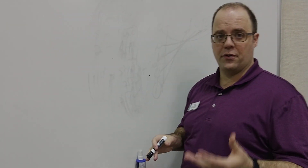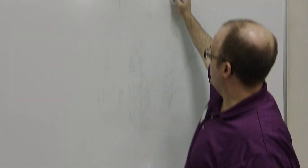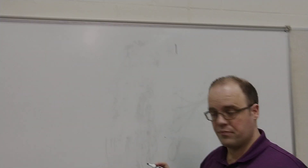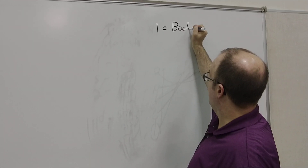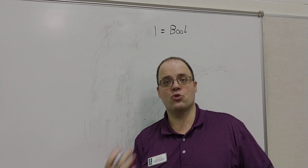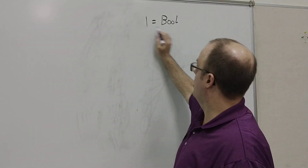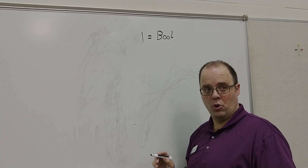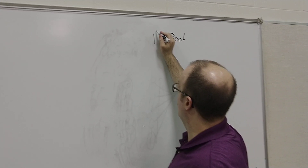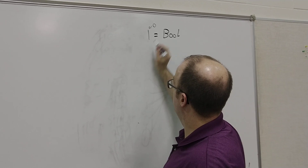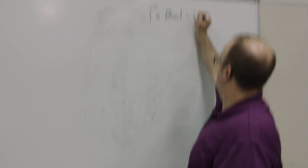There are a couple different data types that computers use. If I have a single 0 or 1, that will be called a bool. Any switch, output, or anything that we use is going to be stored as a bool. It's one bit, and it can either be a 0 or a 1. That's a bool — one bit.